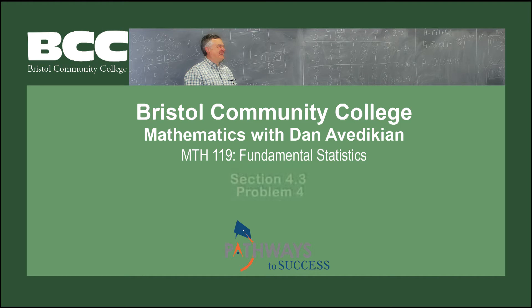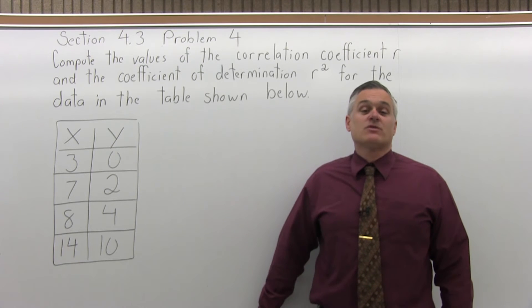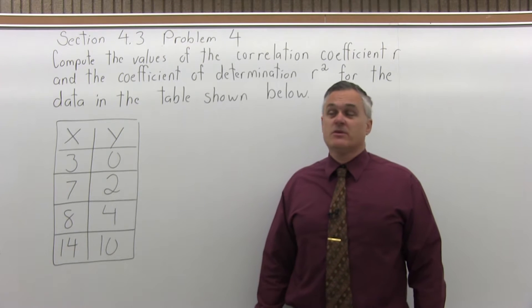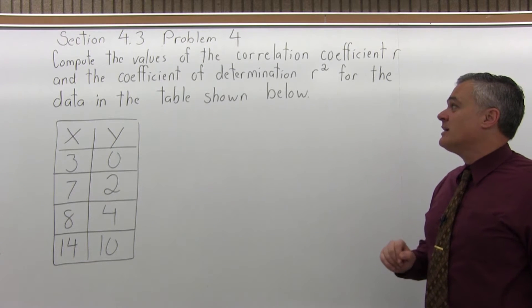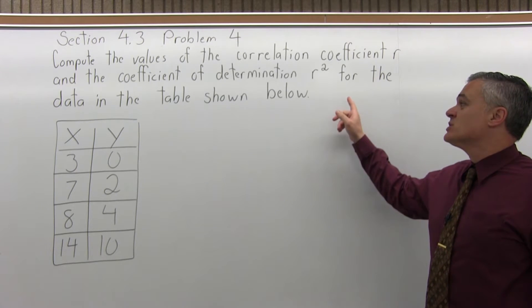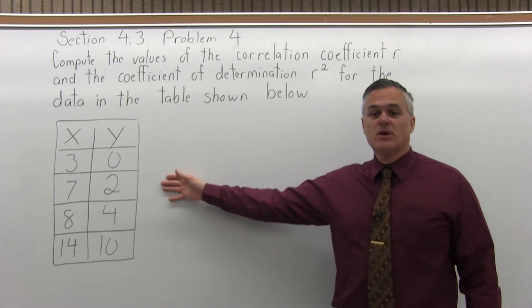Bristol Community College, Mathematics with Dan Avedikian, Math 119 Fundamental Statistics, Section 4.3 Problem 4. This is Section 4.3 Problem number 4. It says compute the values of the correlation coefficient R and the coefficient of determination R squared for the data shown in the table below.